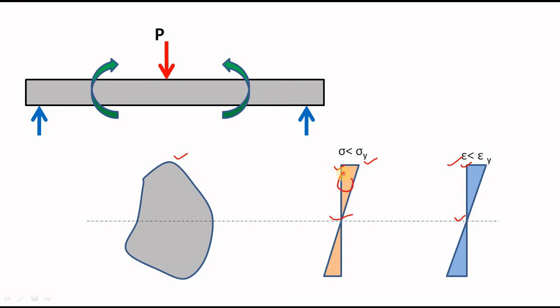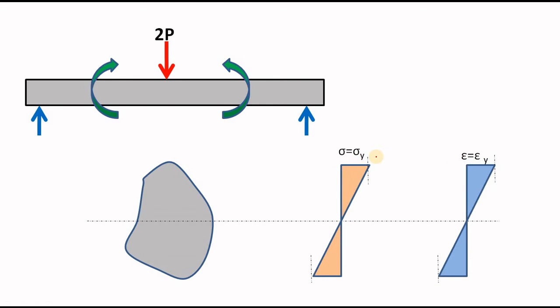This is your compressed zone and this is your tension zone. Let's say the yield stress of your beam material is sigma-y. Here the load is very low, so the maximum strain is less than the yield strain, and the maximum stress at the topmost or bottommost fiber of your beam is less than the yield stress. Now increase the load so that the maximum stress and strain values reach the yield limit. If you further increase the load, what will happen?